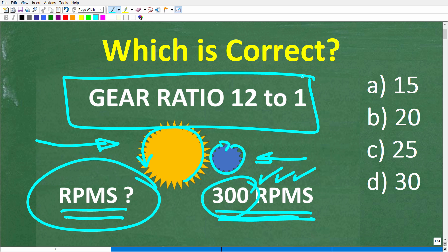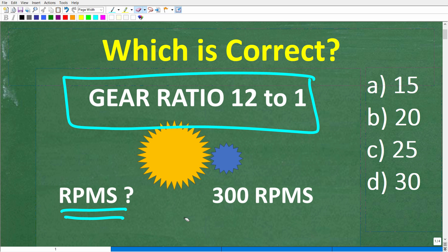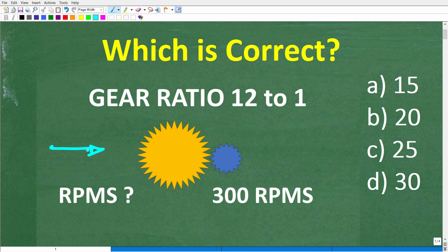This is a simple math question about gears and gear ratios. Just in case you don't know what a gear is, they are mechanical devices that look like these things. This is my depiction of two gears. You find these in engines and clocks.